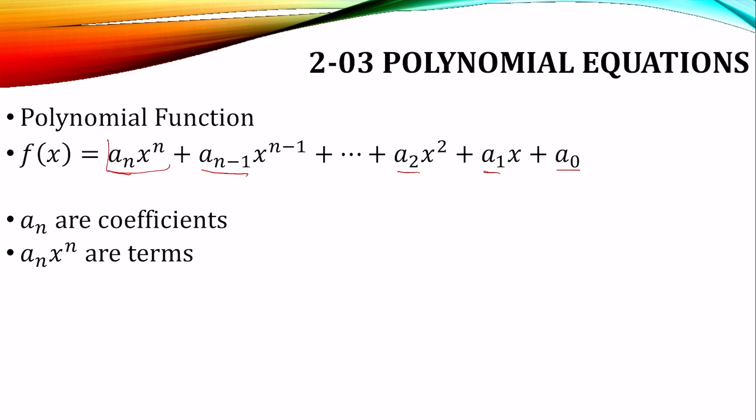The whole groups are called terms. They're separated by addition or subtraction. a₀ down here at the end is the constant term because there's no variable.